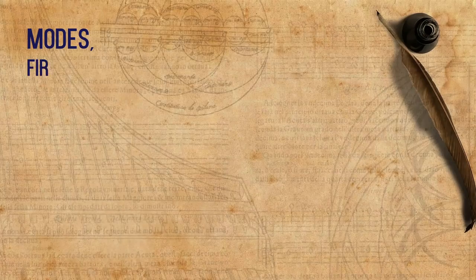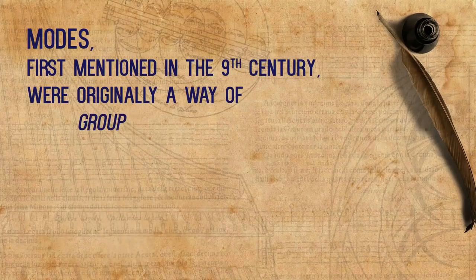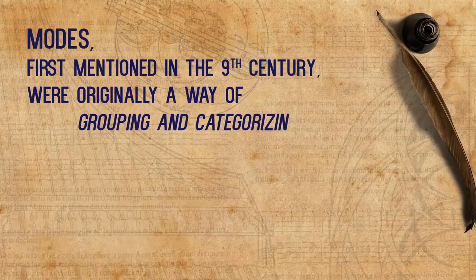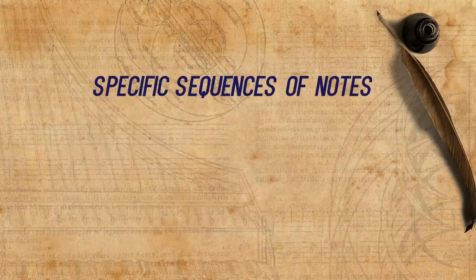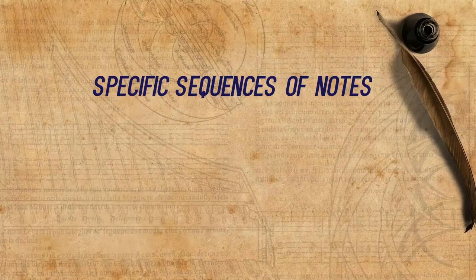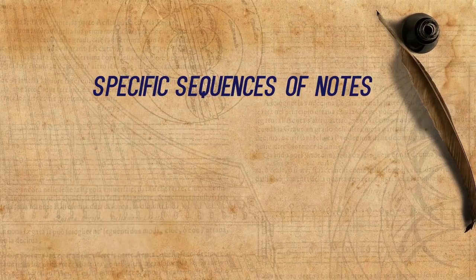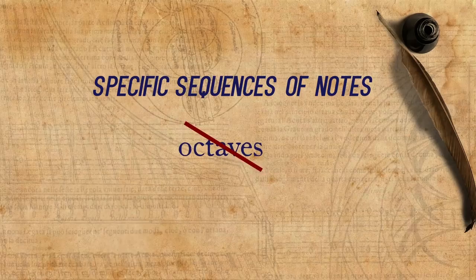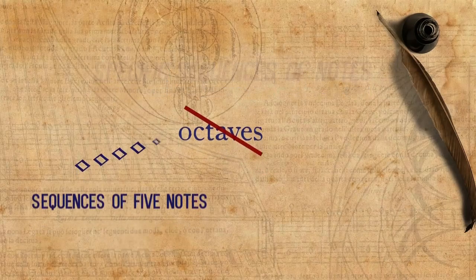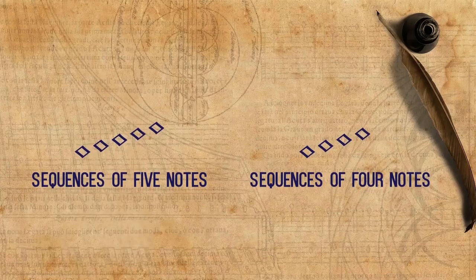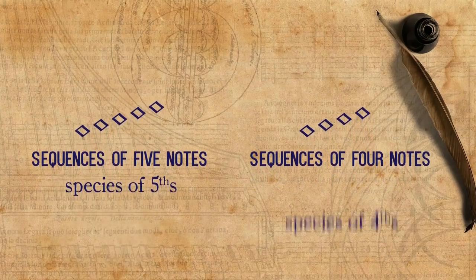Modes, first mentioned in the 9th century, were originally a way of grouping and categorizing Gregorian chants. Modes are made of specific sequences of notes. As opposed to the way that we think nowadays on scales as octaves, the modes are formed by sequences of five notes and of four notes.